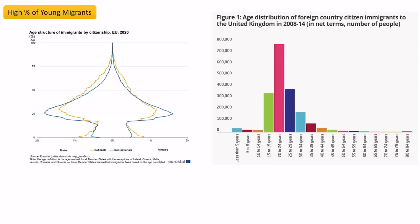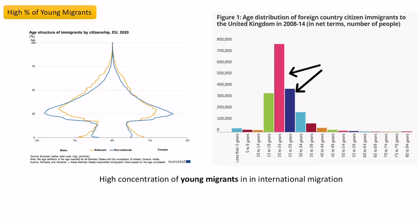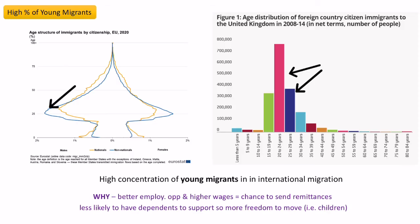The next category is the high concentration of young migrants. From both of these graphs we can see that younger people are often migrating in terms of international migration. On the right, it shows where immigrants have come from to the UK over a period of time, and it's skewed very much to the younger ages. Similarly, looking at all immigrants entering the EU compared to nationals, the blue line shows it's much more skewed toward a younger age.